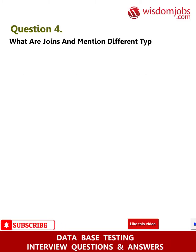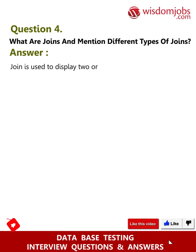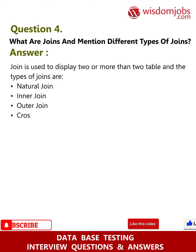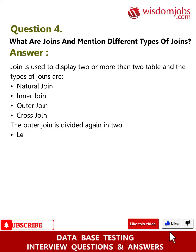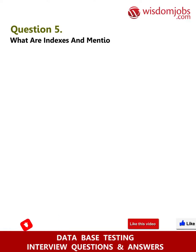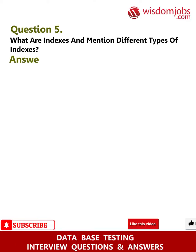Question 4: What are joins and what are the different types of joins? Answer: A join is used to display two or more tables. The types of joins are natural join, inner join, outer join, and cross join. The outer join is further divided into left outer join and right outer join.